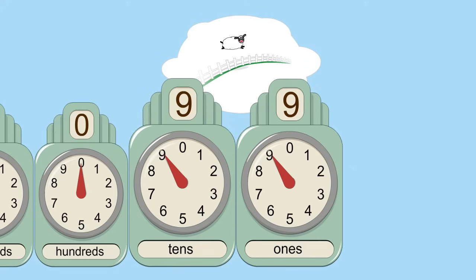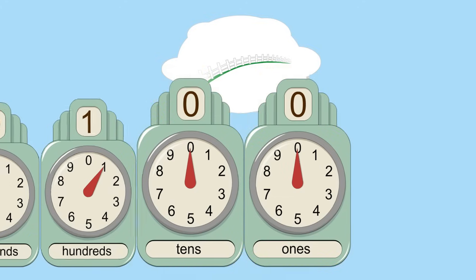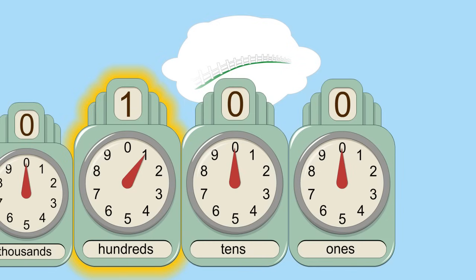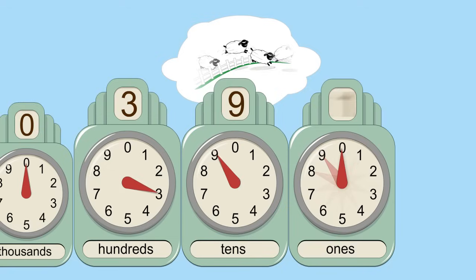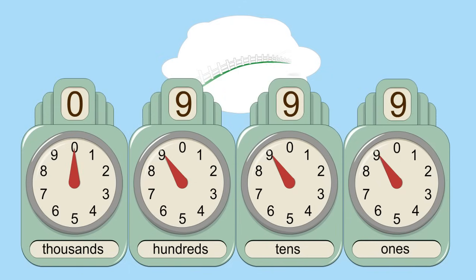This continues until we reach ninety-nine. At that point, the ones and tens column start over at zero, and the hundreds column increments. The positional notation system is simple. Every time a column passes from nine to zero, the next column to the left increments.